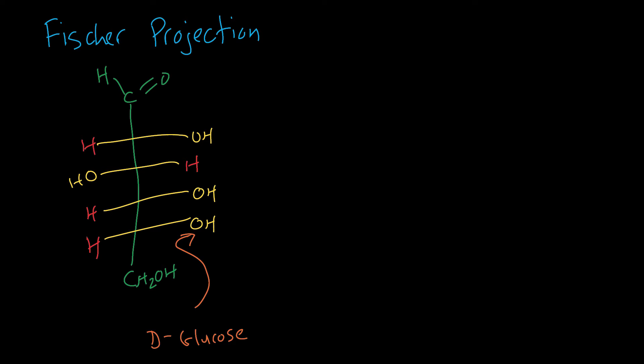The last of that OH determines whether it's D-glucose or L-glucose. If the OH group is on the right, that means it's D-glucose. If it was on the left, it would be L-glucose. D-glucose is a lot more common, so that's the way you see it most of the time.